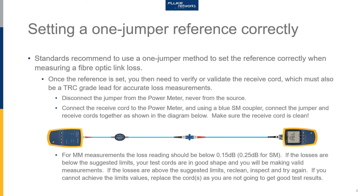If the measured losses are above the suggested limits, reclean the field connectors, inspect to confirm they are clean, and give it a try again. If you cannot achieve the suggested loss values for the mated cords, you really need to consider replacing the cords because they may be worn out. If you can't get low mated results when verifying the cords, you are not going to get good test results. If your reference is poor and your cords are poor, you are going to get poor measurement results.